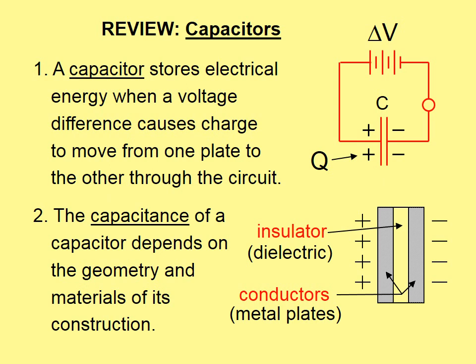To review, a capacitor stores electrical energy when a voltage difference causes charge to move from one plate to the other through the circuit. You can see this picture here — we have three batteries, and this might represent a light bulb, for example, and here's a capacitor, which is represented by two equally long lines in the circuit. When we apply that voltage, charge is transferred from one plate to the other.